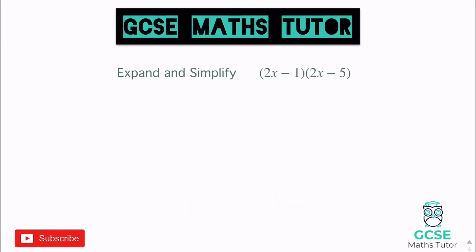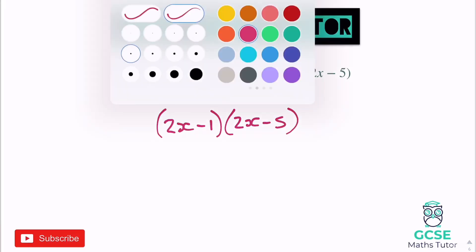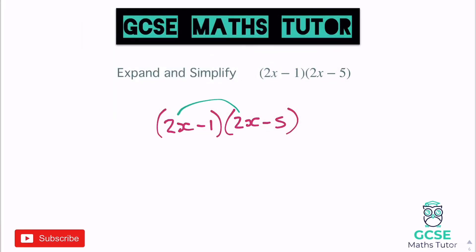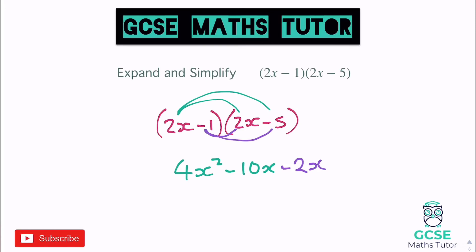Let's look at one more before you have a go. Expand and simplify 2x minus 1 and 2x minus 5. So 2x times 2x is 4x squared. 2x times negative 5 is negative 10x. Negative 1 times 2x is negative 2x. And negative 1 times negative 5 gives us positive 5. Tidying up: both middle terms are negative, so negative 10 take away 2 is negative 12, giving negative 12x, and then plus 5 at the end.